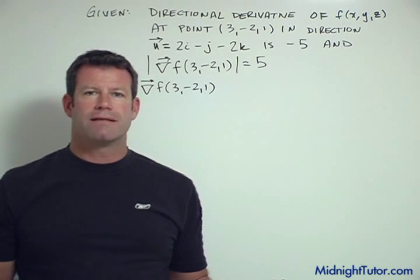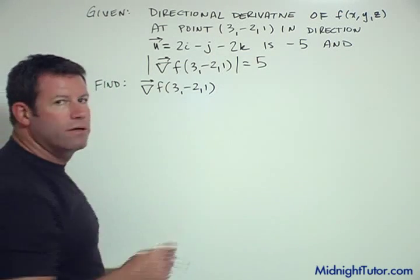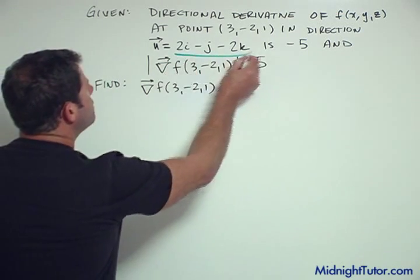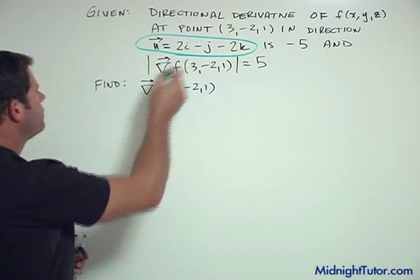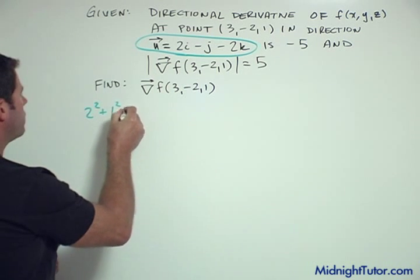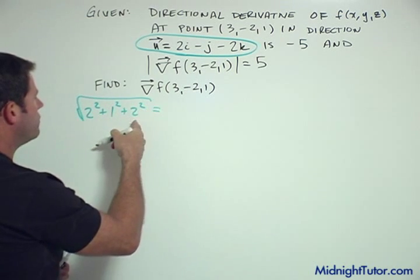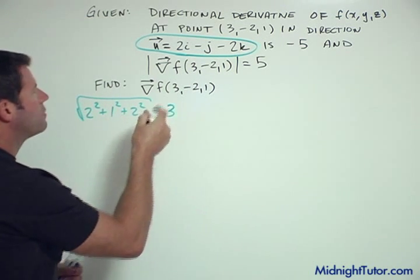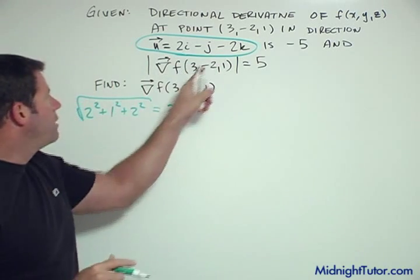So the first thing to note is that this unit vector u is not actually a unit vector. It's 2² + 1² + 2², so it actually has a magnitude of √9 which is 3. So it's not actually a unit vector. If we ever need to use a unit vector we have to divide it all by 3 in order to make it correct.